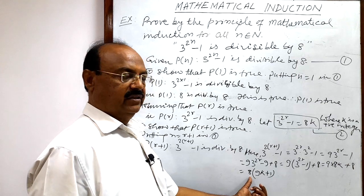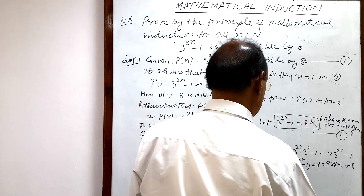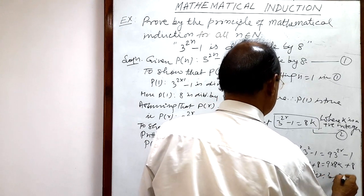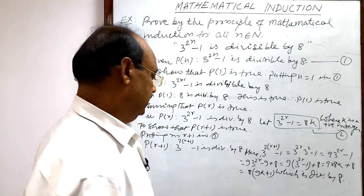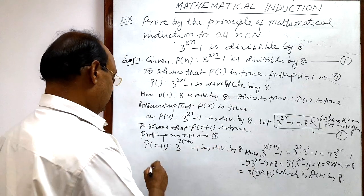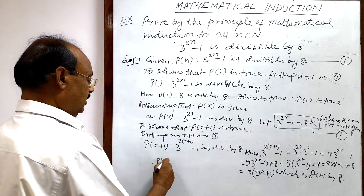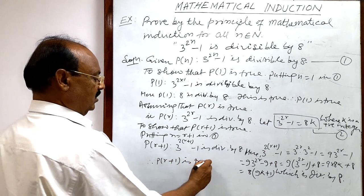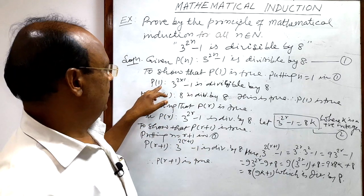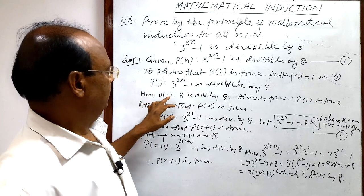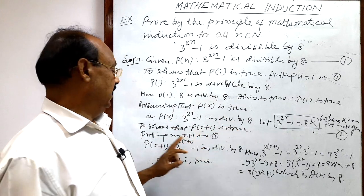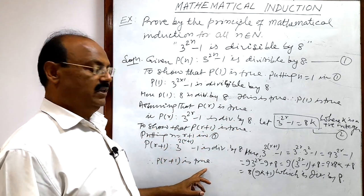This is divisible by 8 because 8 is a factor. So it has been proved that this is divisible by 8. Therefore, P(r+1) is true. This is the last and final step. So we have done all three steps: first step we showed P(1) is true, second step we assumed P(r) is true, and third step we showed P(r+1) is true.